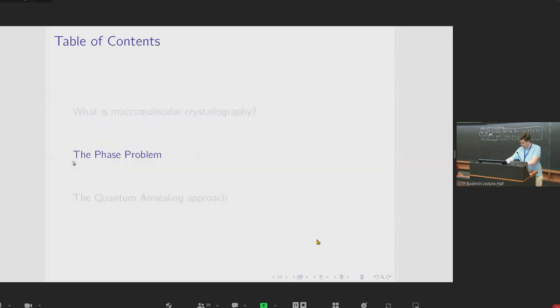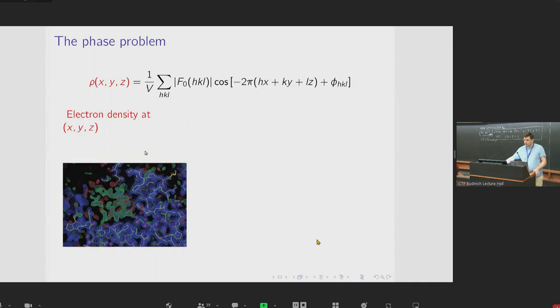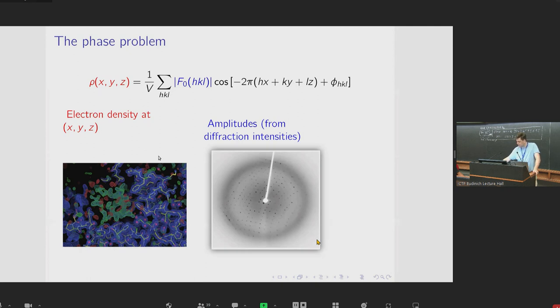However, there is a particular problem with doing this, which is called the phase problem. The equation that relates the electron density to the X-ray reflections looks like this. The rho on the left-hand side there is the electron density at real space coordinates X, Y, and Z. And the measured X-ray diffraction intensities go into this equation via the amplitude term here, which I've shown here in blue. And those HKL numbers are the reciprocal space coordinates for the particular reflection.